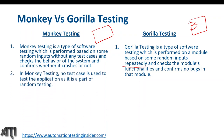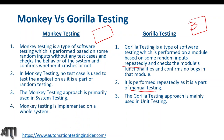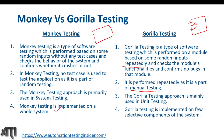In monkey testing, no test cases are used to test the application as it is part of random testing. It is performed without a fixed plan as it is part of manual testing. The monkey testing approach is primarily used in system testing, while the gorilla testing approach is mainly used in unit testing. Monkey testing is implemented on the whole system, whereas gorilla testing is implemented on a few selective components of the system.